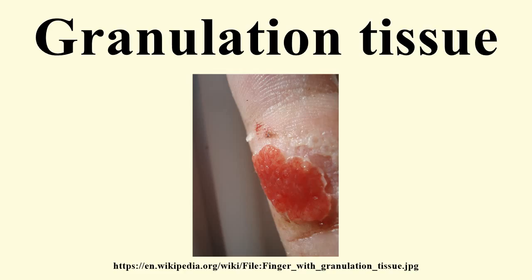Granulation tissue is composed of tissue matrix supporting a variety of cell types, most of which can be associated with one of the following functions: formation of extracellular matrix, operation of the immune system, or vascularization. An excess of granulation tissue is informally referred to as proud flesh.